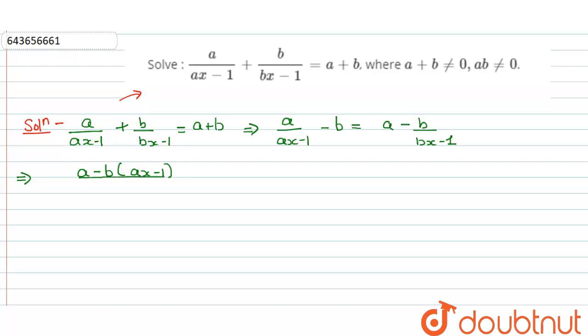it will be a minus 1 upon a, bx minus 1 minus b is bx minus 1. Let's do a cross multiplication of these two terms.